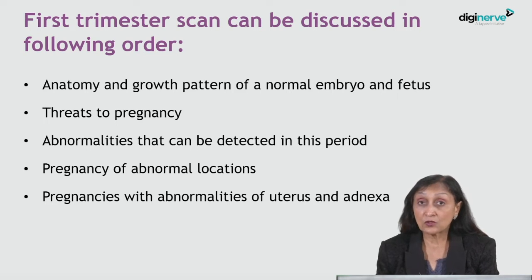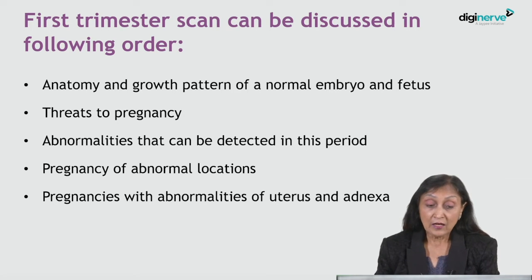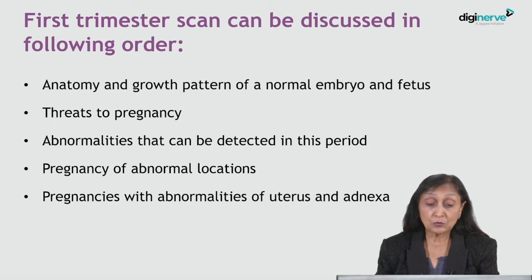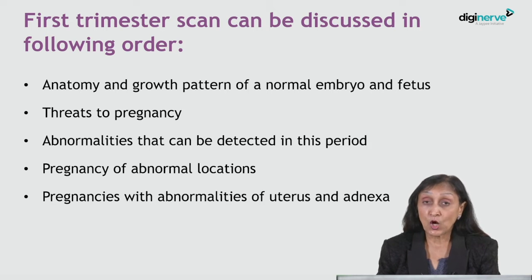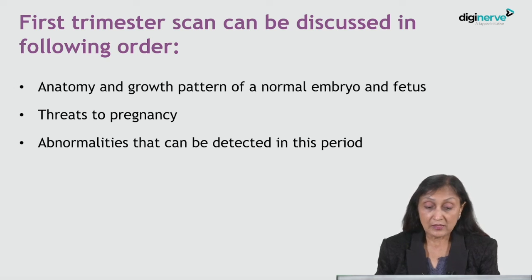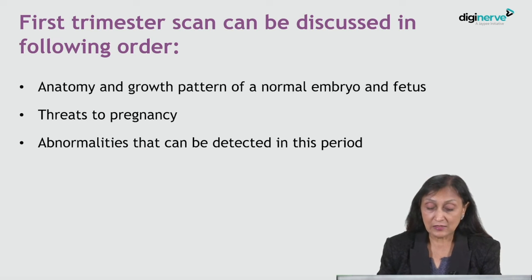The first trimester scan will be discussed in the following order: anatomy and growth pattern of the normal embryo and fetus, threats to pregnancy, abnormalities that can be detected in this period, pregnancy of abnormal locations, and pregnancies with abnormal uterus and adnexa. In this presentation we will concentrate more on the growth pattern of the embryo, threats to the pregnancy, and abnormalities detectable in this period.